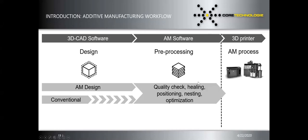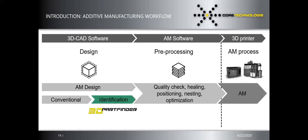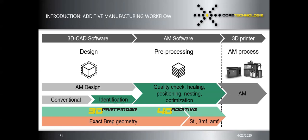The AM software workflow consists of a quality check including repairing models, positioning, nesting, and optimizing the build. To find use cases for 3D printing, the 3D Pathfinder comes in, enabling you to scan a whole database of millions of parts and apply specific filters to identify applications for 3D printing.